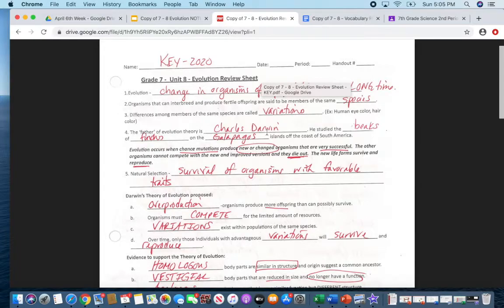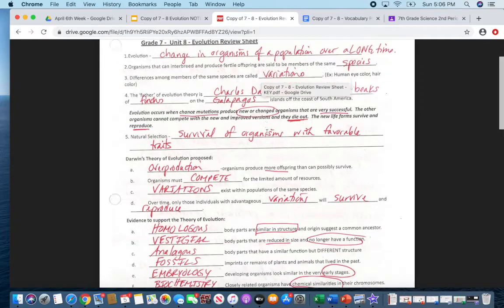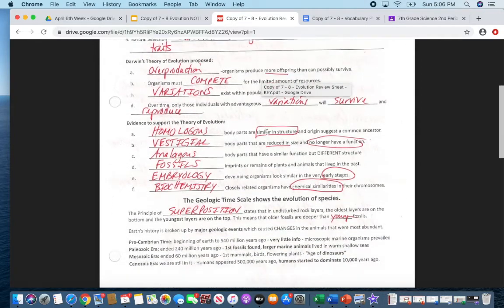What was special about the beaks of the finches was that each finch, each different species of finch had their own type of beak. And their beak was dependent on the food source that was available in the environment. Because once again, the environment does drive evolution. If there was only little small insects in the sand, would a big large beak be beneficial? Probably not.